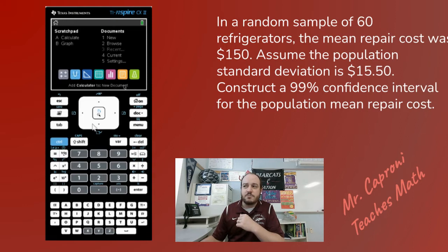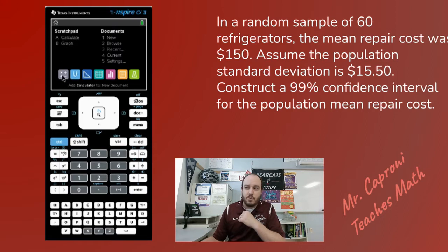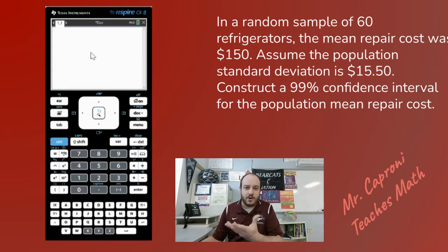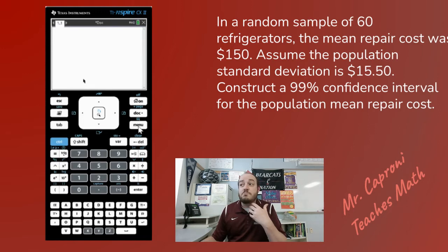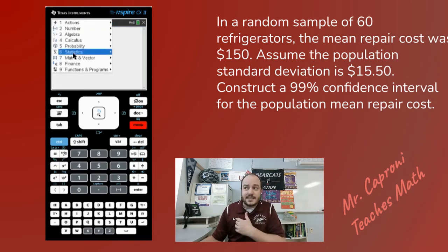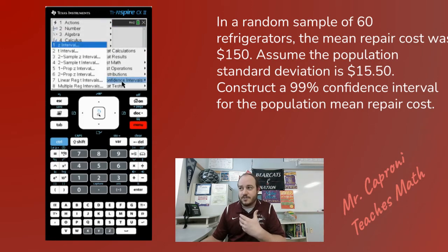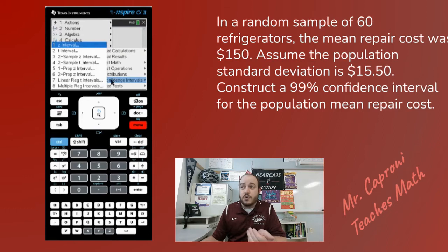Starting from the home screen, go ahead and click on the calculator portion to bring up the calculator. From there, go to Menu, then Statistics, then down to Confidence Intervals. For the population standard deviation known, we're going to be looking at number one, which is the Z Interval.